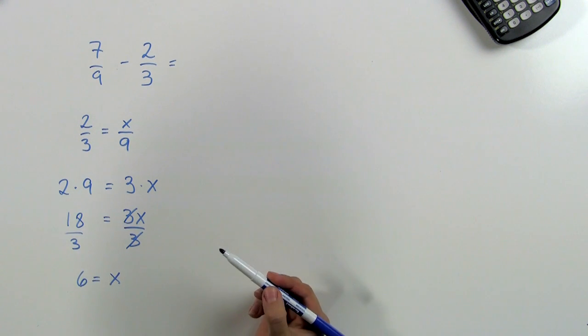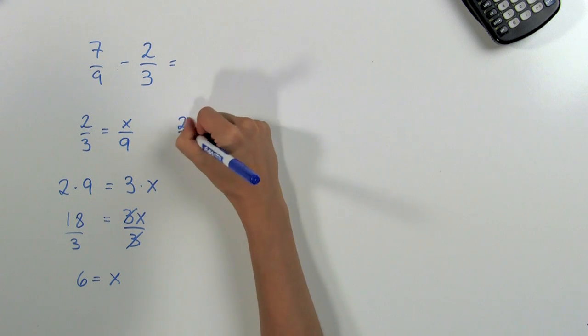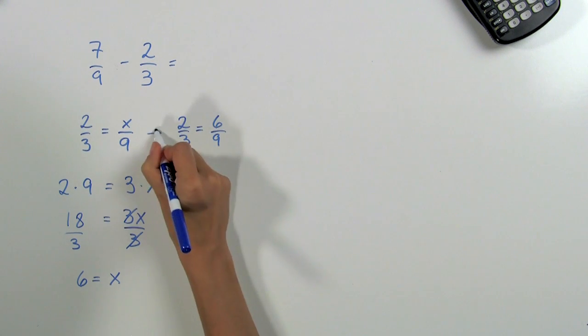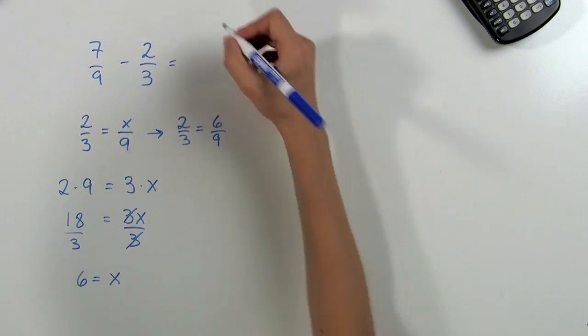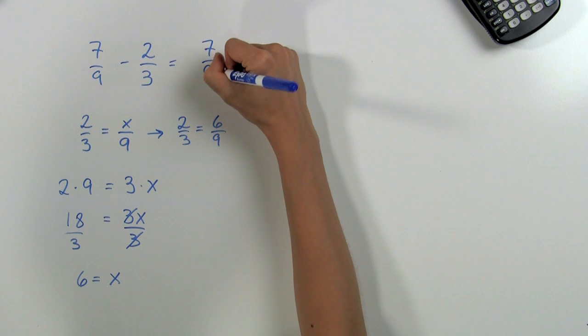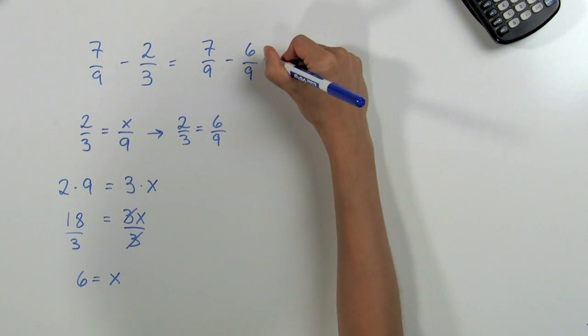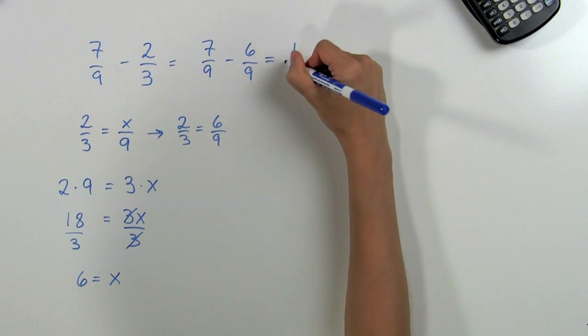Since we know that x is equal to 6, we can rewrite 2 thirds as 6 ninths. So now our problem is 7 ninths minus 6 ninths, and since we have common denominators, we can subtract across and get 1 ninth.